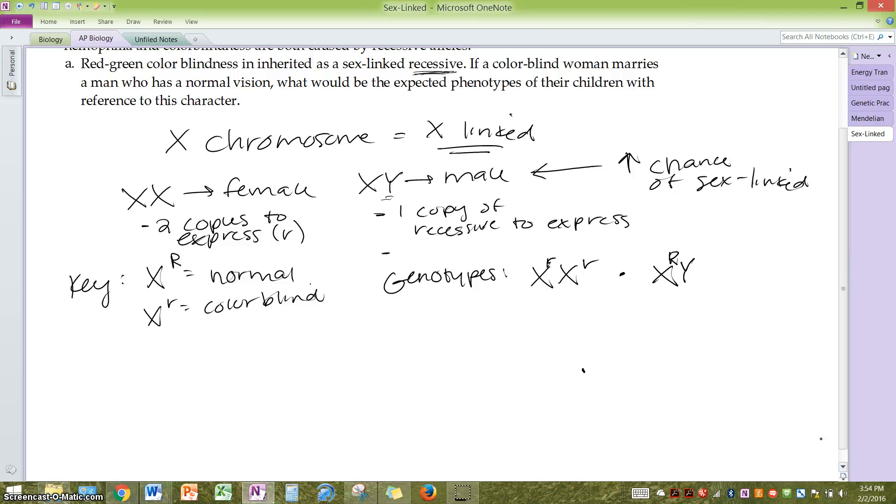I'm going to figure out what my gametes are going to be. Remember, you can give one allele, not both. So one gamete is going to have a little r, big X R. This individual is going to have X, and then Y is going to be the other gamete.